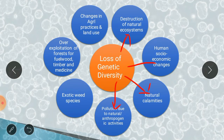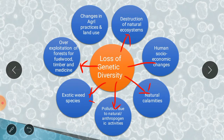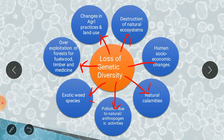Pollution due to natural as well as artificial activities also leads to the extinction of plant species. Exotic weed species also create a problem for the survival of other species. Over-exploitation of forests for fuel wood, timber, and medicine — on a large extent, harvesting from forests will also result in loss of genetic diversity. Changes in agricultural practices and land use, where we are shifting cultivable land to urban and civilization purposes, will also result in extinction of plant species.